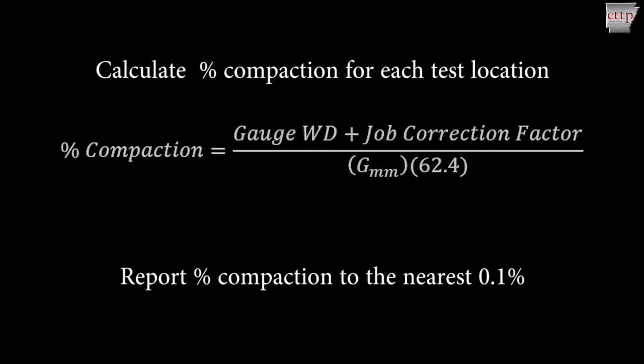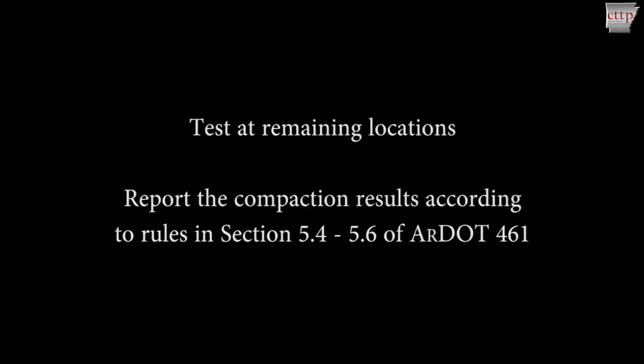Calculate the percent compaction for the test location by adding the job correction factor to the wet density, then dividing by the maximum density of the mixture. Report the percent compaction of each test to the nearest 0.1%. Test at the remaining locations, and report the compaction results according to the rules found in section 5.4 through 5.6 of RDOT 461.